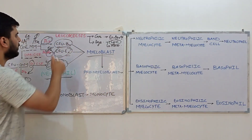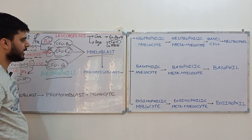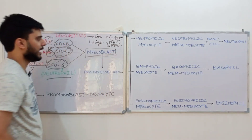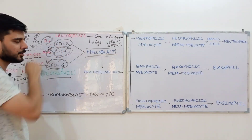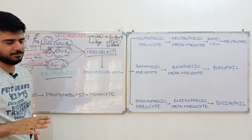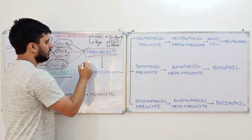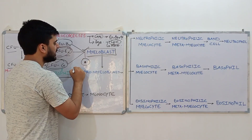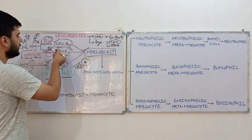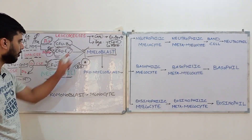Each CFU forms its own specific myeloblast — for example, CFU-basophil forms a basophilic myeloblast, and CFU-eosinophil forms an eosinophilic myeloblast. However, the myeloblast stage is morphologically similar across all granulocytes. It is a large cell with a large nucleus that stains basophilically — so even an eosinophilic myeloblast will stain basophilic at this stage. The myeloblast is the common stage for all granulocytes.